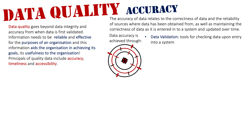Firstly is data validation — these are tools for checking data upon entry into the system. We can make many rules for checking data when it goes into a system. There are rules known as type checks, which check the data type when it goes into a system, so it has to be either a number, text-based, or follow a specific format. We also have range checks, where values must lie within a specific range. For example, when looking at people's dates of birth, if the number doesn't start with 19 at the front, that date of birth can't really exist, since we don't have many people born in the 1800s.